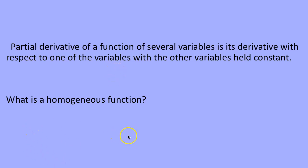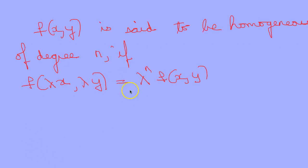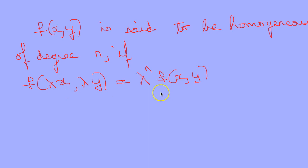What is a homogeneous function? A function in x and y is said to be homogeneous of degree n if f(λx, λy) = λ^n · f(x, y), that is we can take out λ raised to n.